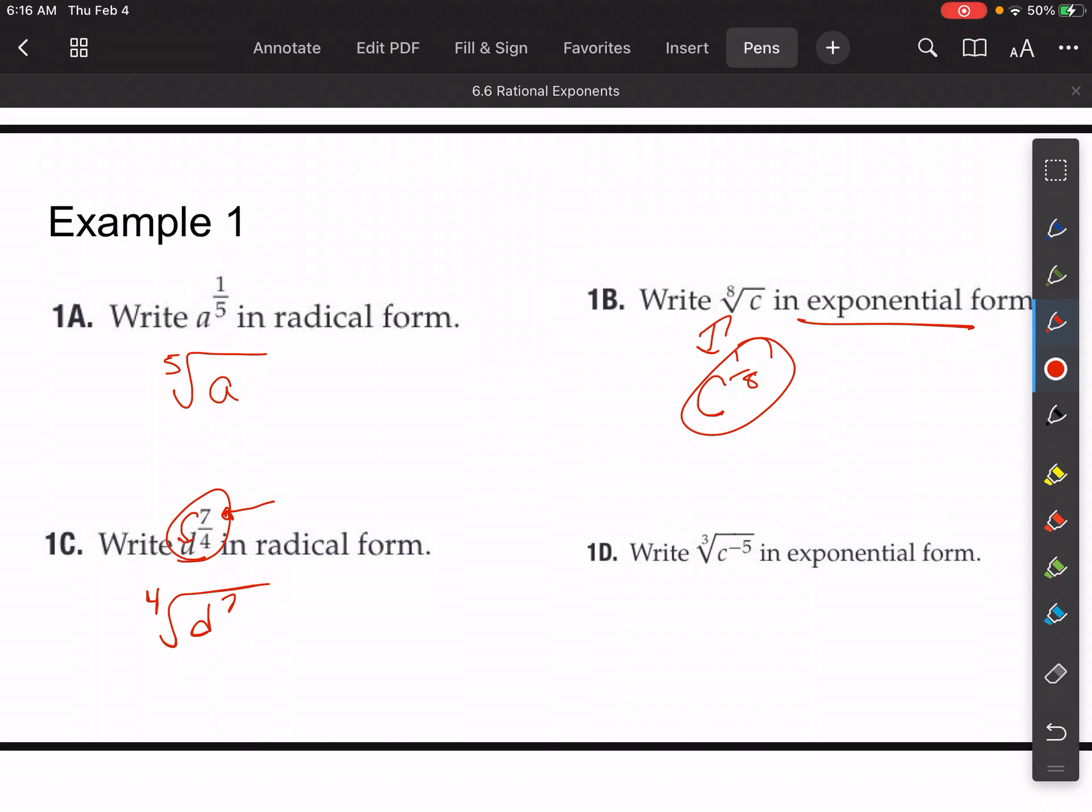For this one, the last one, we have this one in exponential form. So c to the negative 5, so we can write that c to the negative 5. But then we're taking the third root of that, so we're dividing that negative 5 by 3.